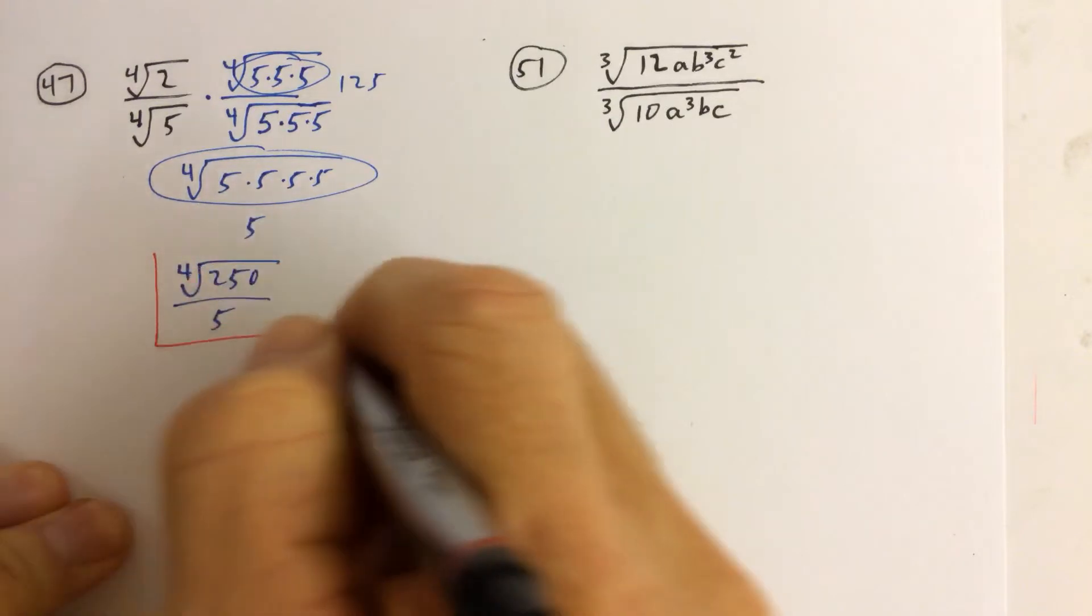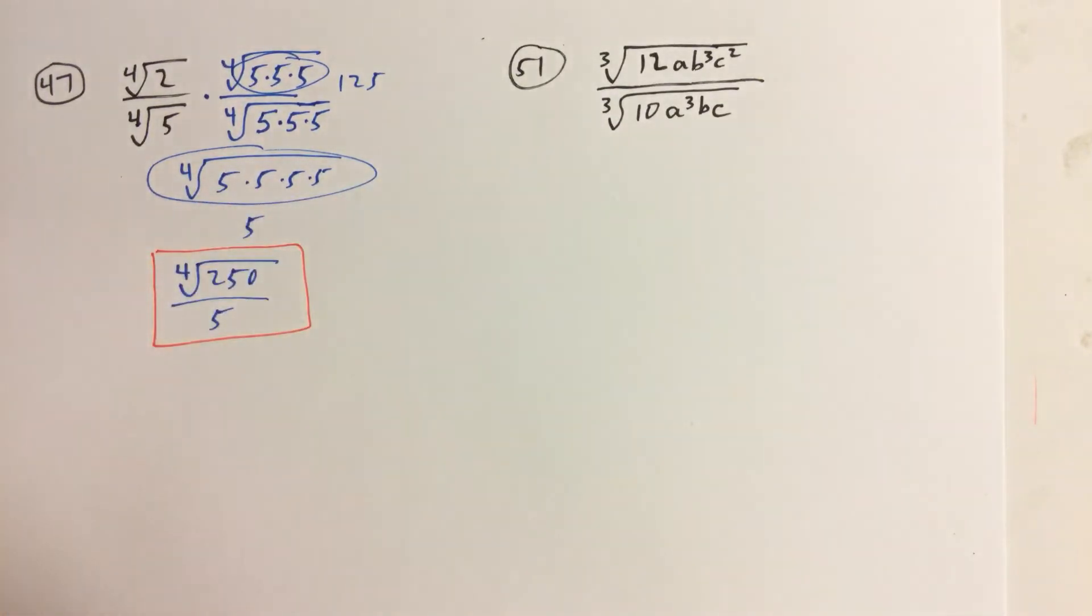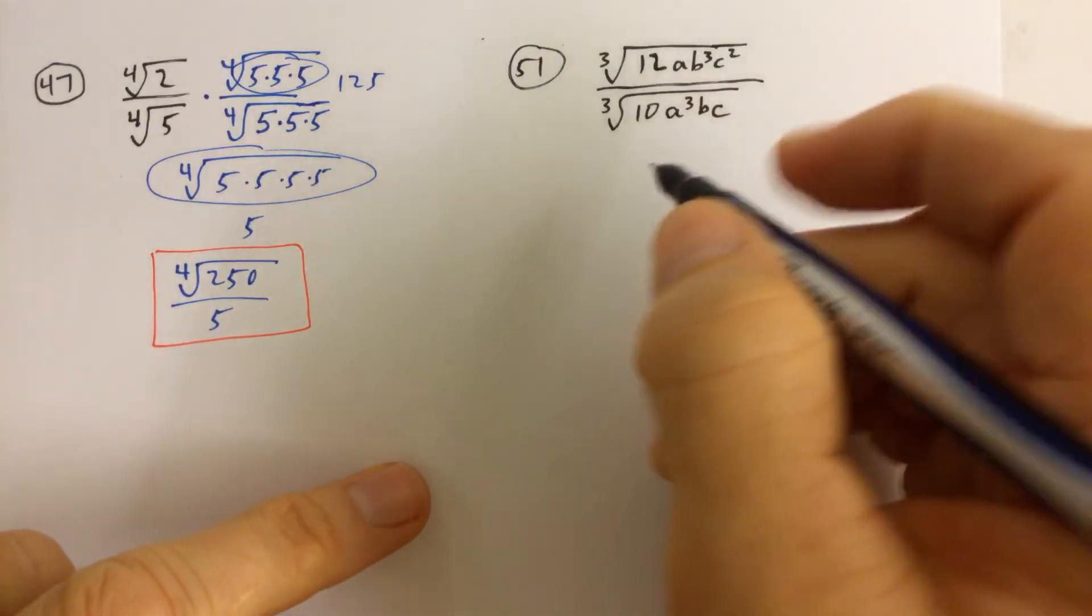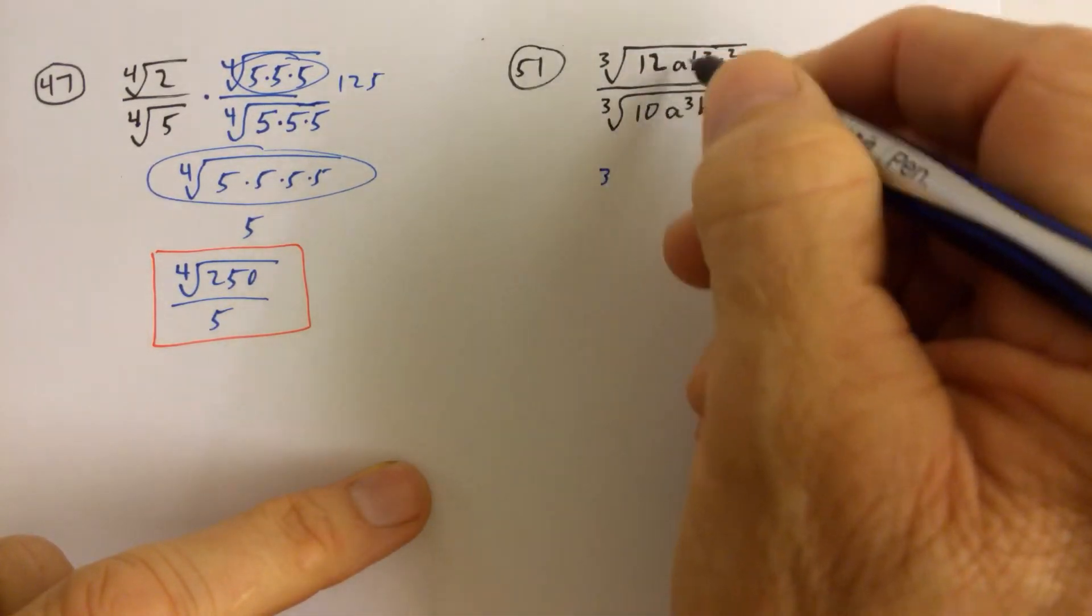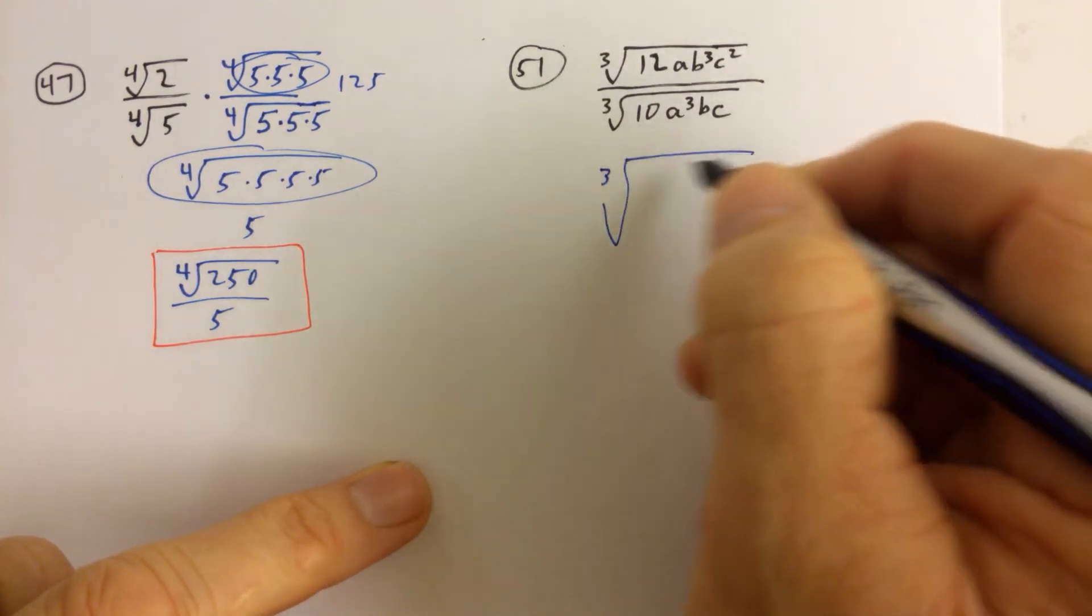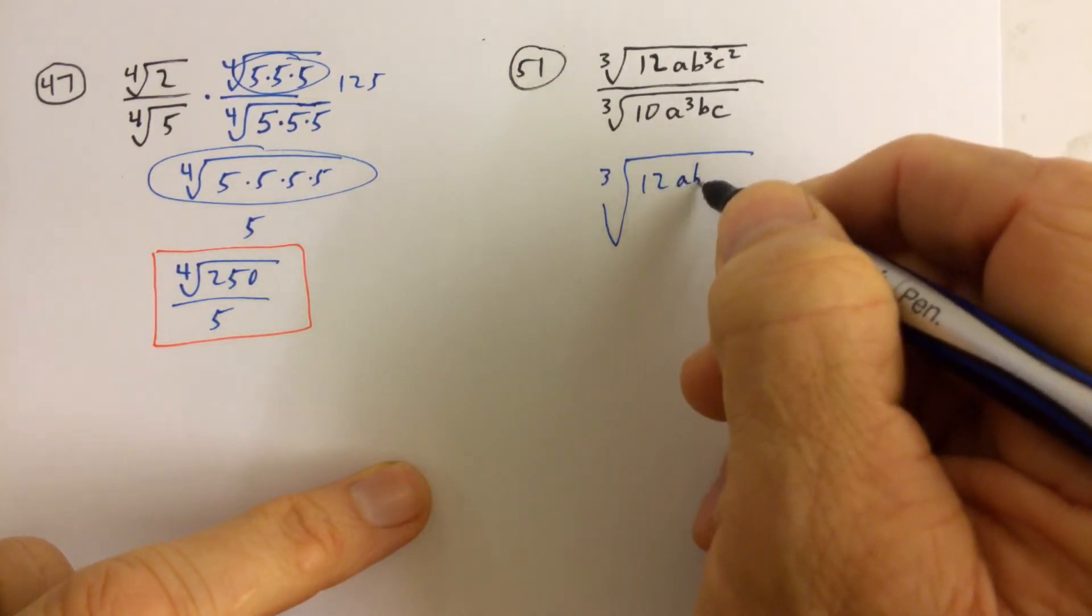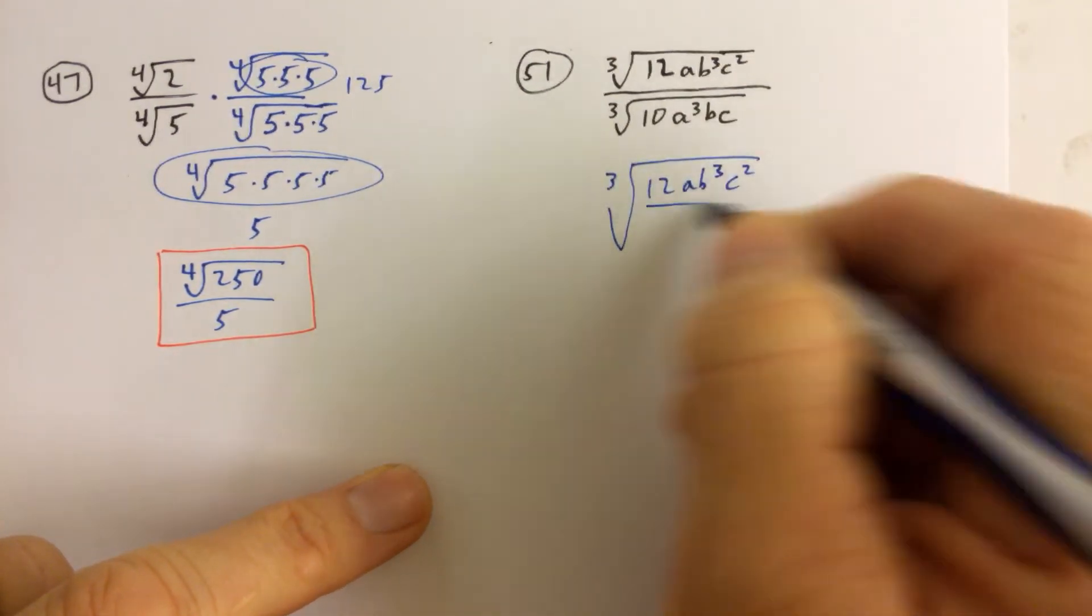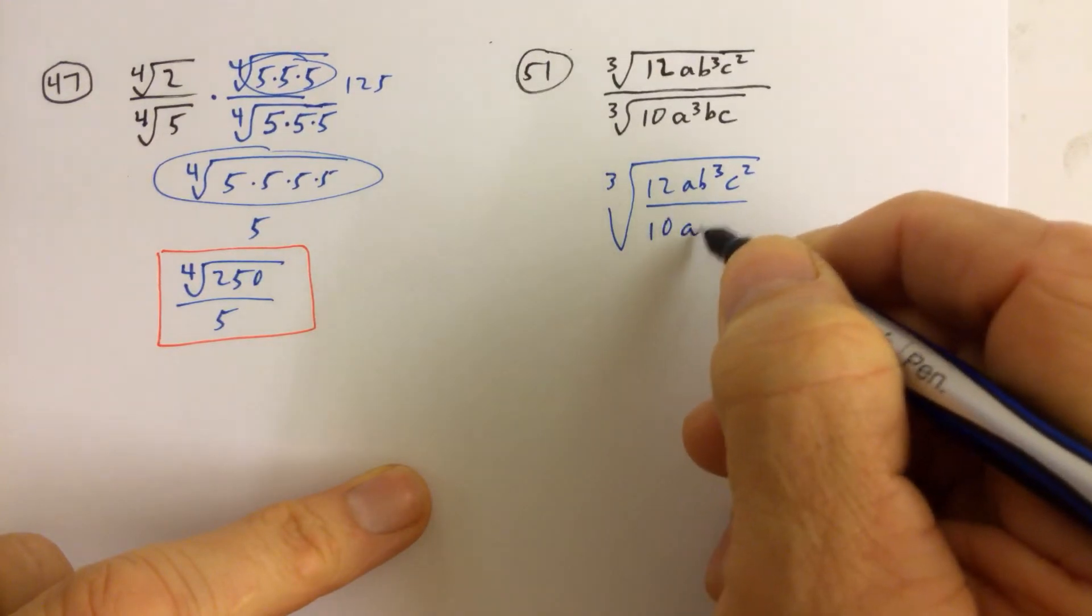So that takes care of problem number 47, and now we have one more. And in problem number 51, we see we have the same root. So we notice here we have some things that we can cancel. So we're going to go ahead and rewrite everything underneath one big cube root symbol. And then we're going to cancel,